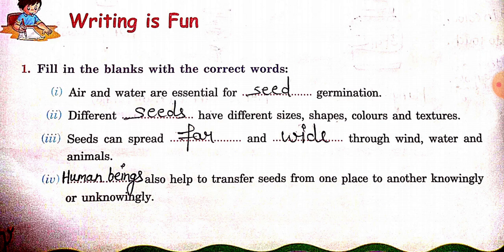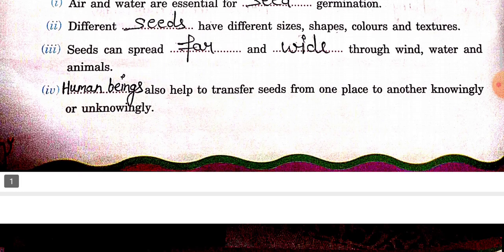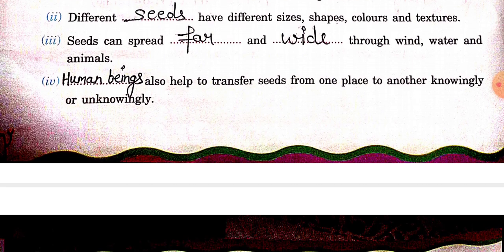Third: seeds can spread far and wide through wind, water and animals. The seeds are spread far and wide through wind, water and animals.